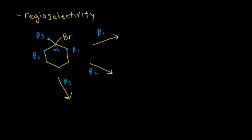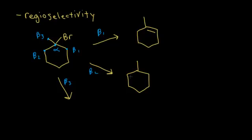If a strong base reacts with the proton at the beta 1 position, the double bond forms between the alpha carbon and beta 1, giving one product. For beta 2, the double bond forms between alpha and beta 2, giving another product. The third possibility has the double bond forming between alpha and beta 3. Looking more closely, the beta 1 and beta 2 products are actually the same molecule — if you name them, you get the exact same name — so there are really only two distinct products.